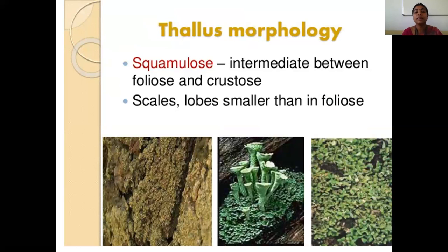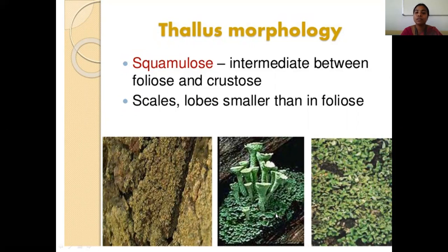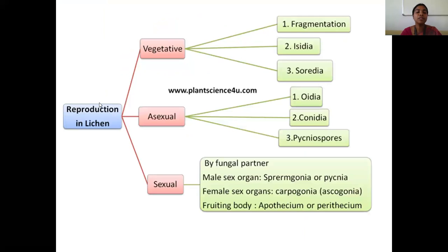The fourth type is squamulose lichen. Its morphology is intermediate between foliose and crustose. Some members of squamulose lichen are like crustose lichen with no lower surface; other members have a lobed structure, but compared to foliose lichen the lobes are very small. So squamulose lichen has an intermediate thallus structure between foliose and crustose lichen.